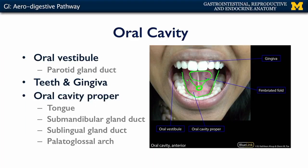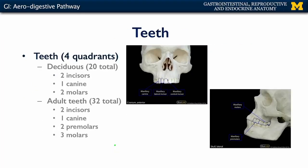The oral cavity proper extends posteriorly to the palatoglossal arch. That palatoglossal arch is the division between the oral cavity and the oropharynx. Teeth are important structures for physical digestion — they incise, they tear, and they grind materials brought into the oral cavity.